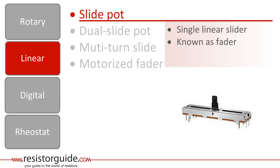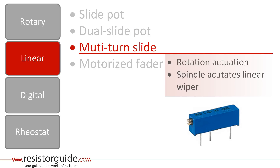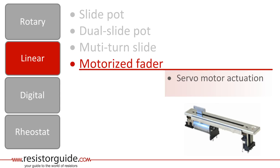The second category is the linear pot meter. The slide pot has a single linear wiper, and is also known as fader. A dual slide pot has one slider that actuates two pot meters in parallel. A multi-turn slide is adjusted by rotation. A spindle transforms the rotation in the linear motion of the wiper. And finally, a motorized fader is actuated by a servo.